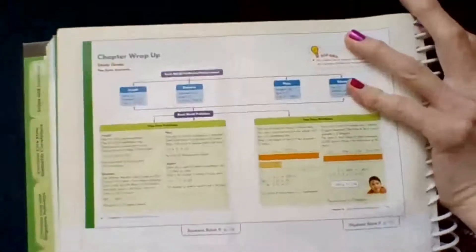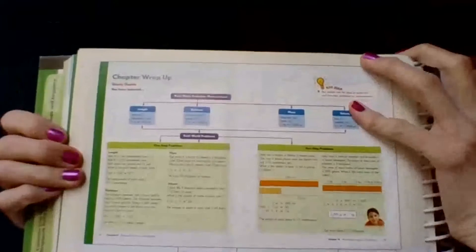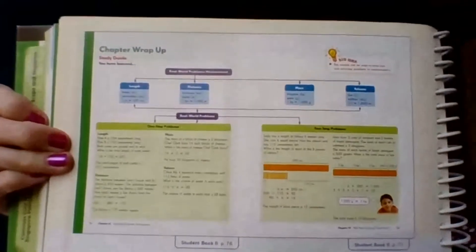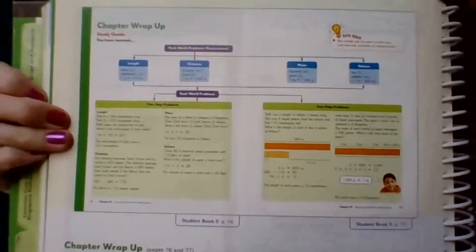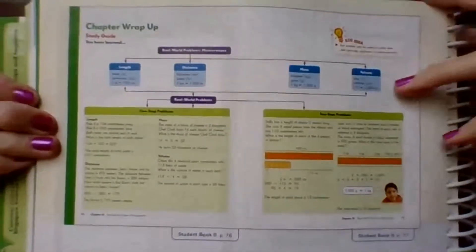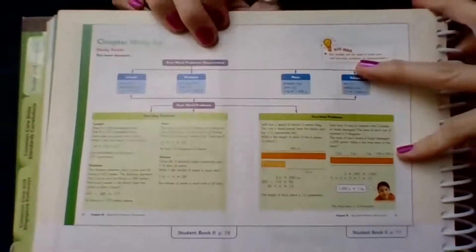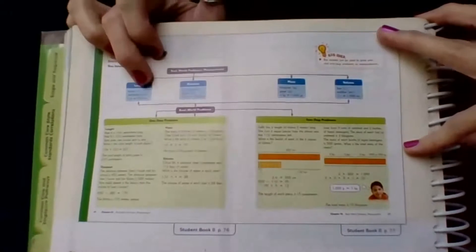Hi, thanks for tuning in for the Chapter 12 wrap-up. This was such a short chapter, so we're already wrapping it up and there's already going to be a short little test. Let's review. If you have your math book, then you should absolutely pull it out. Your math book will be page 76-77 and it will have all of this information that we're going to review.